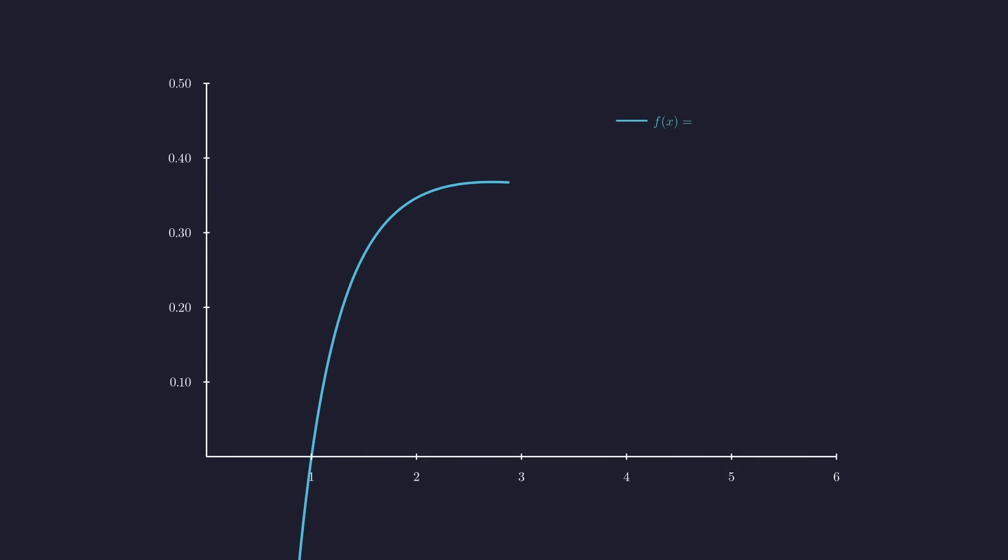The algebra tells us the story, but let's see what this function actually looks like. Let's set up some axes to see this function in action. And there's our function. Just as the calculus predicted, it rises to a peak and then gently falls away. The mathematics checks out perfectly. The function reaches its peak exactly at x equals e, where the value is 1 over e. This is the highest point on our curve.